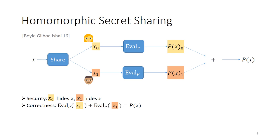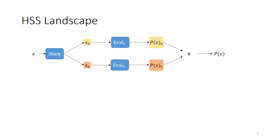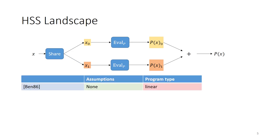When the parties want to reconstruct the output they can combine these shares by just adding them together to obtain the result P of x. Note that this reconstruction procedure really is just addition. In some forms of HSS you allow more complex reconstruction, but here we'll just be focusing on the simplest kind of additive reconstruction. If you're familiar with standard secret sharing, using any linear secret sharing scheme such as additive secret sharing or Shamir secret sharing, you can build HSS for linear functions just by applying the linear function to the shares.